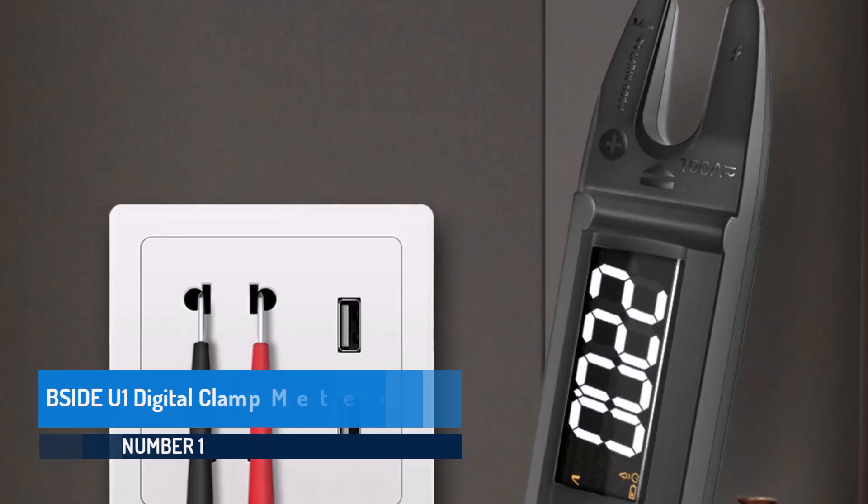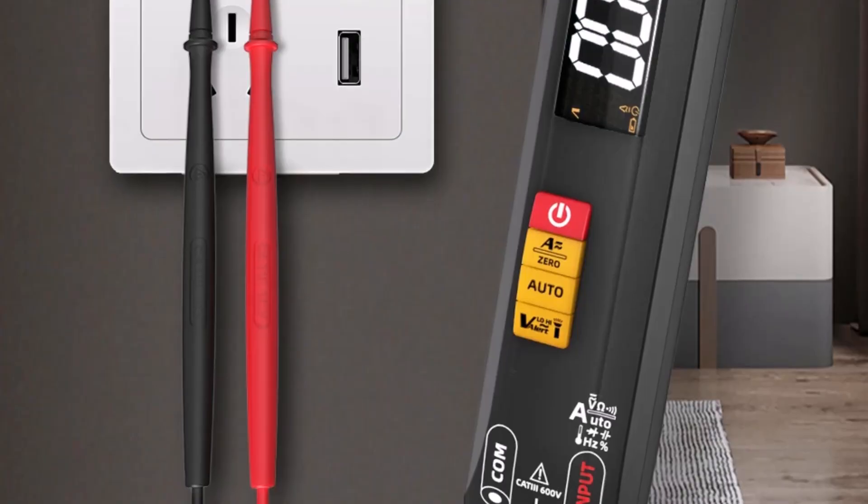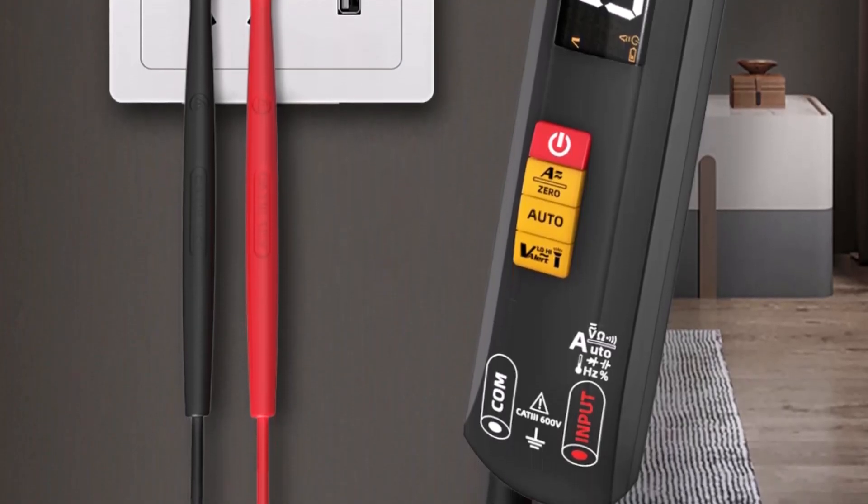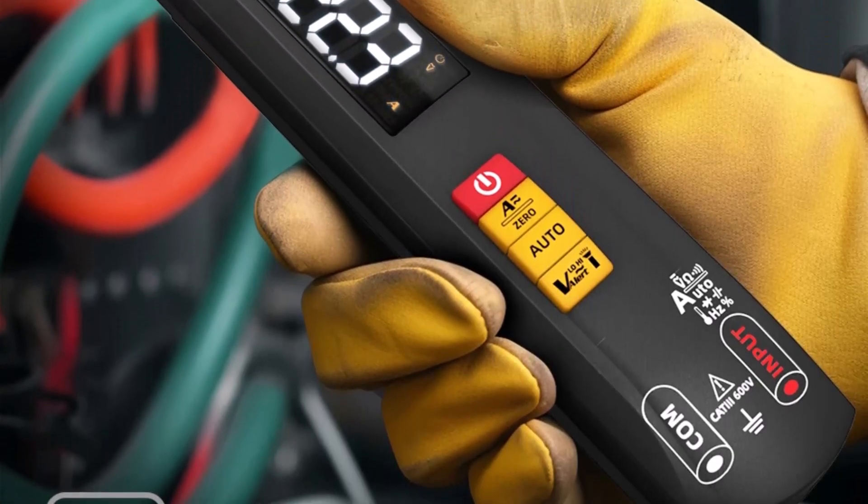B-Side U1 Digital Clamp Meter. The B-Side U1 Digital Clamp Meter stands out as a professional grade DC-AC ammeter designed for users who want accuracy, convenience, and modern features in one compact tool.